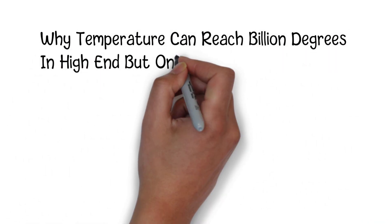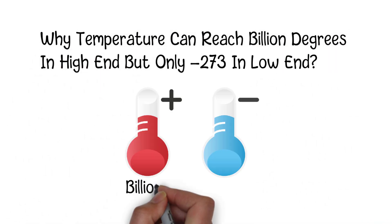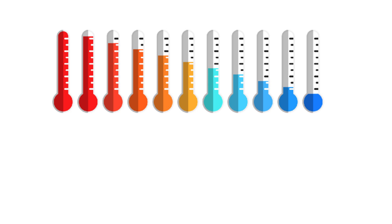Why can temperature reach billions of degrees at the high end but only minus 273 at the low end? We all know that the lowest temperature is absolute zero, which is equivalent to minus 273.15 degrees Celsius or minus 459.67 degrees Fahrenheit.